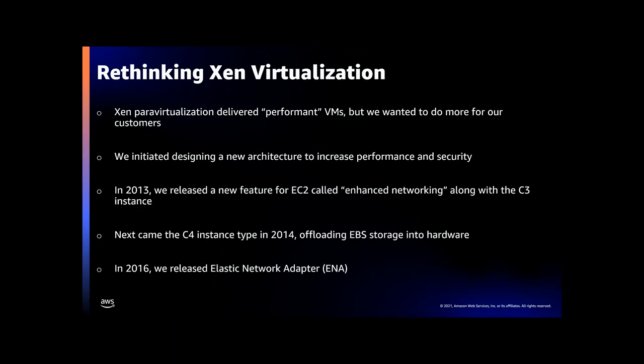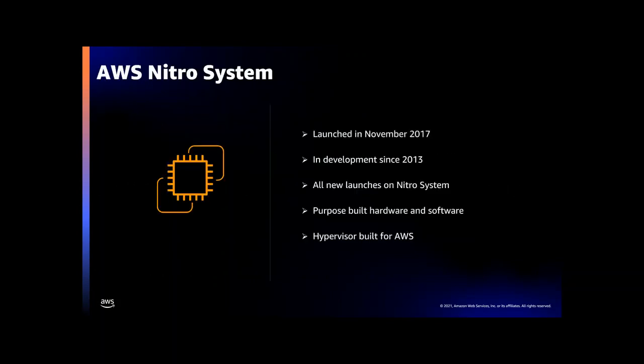Our ultimate goal has always been to give all available CPU cores to customers. So we kept asking ourselves: can we do better? All our efforts eventually led to the Nitro system, launched at re:Invent in 2017. While that was the first time we talked publicly about Nitro, it was a journey that started with those C3 instances back in 2013. We kept introducing various elements of the Nitro system — like the EBS and ENA hardware — into EC2 instances over the years. Since 2017, all new instances we have introduced run on top of the complete Nitro system, a system with purpose-built hardware and new software to free up even more CPU cycles for our customers.